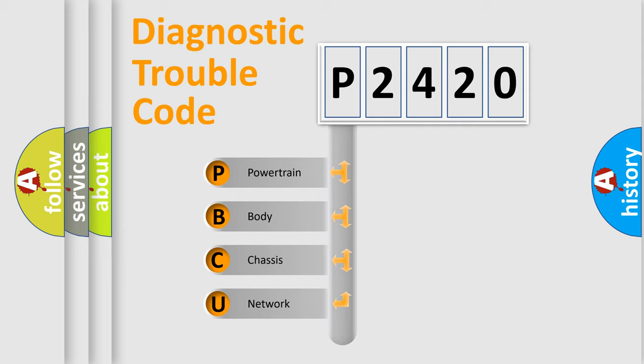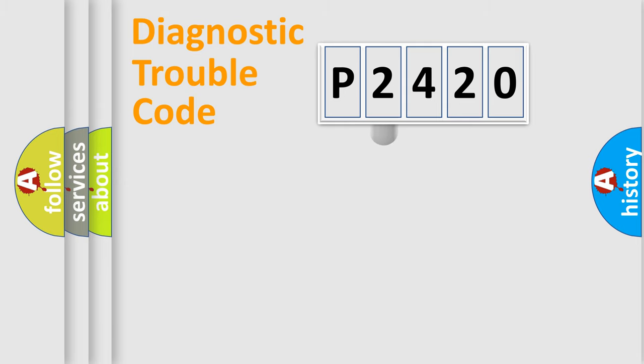We divide the electric system of automobile into the four basic units: Powertrain, Body, Chassis, Network. This distribution is defined in the first character code.